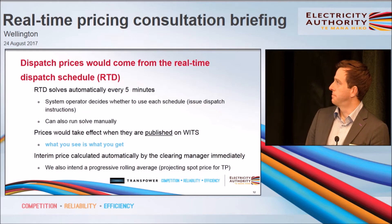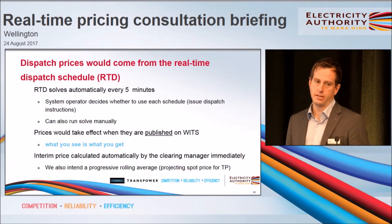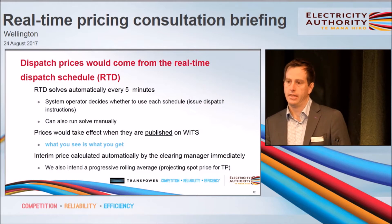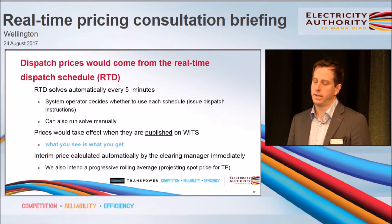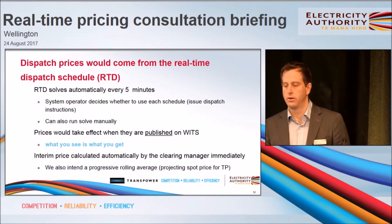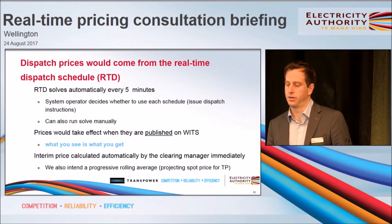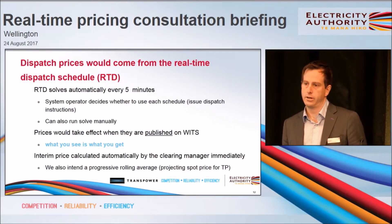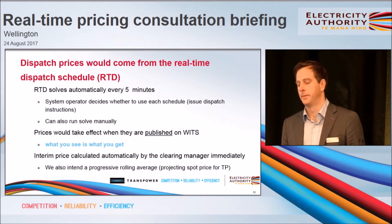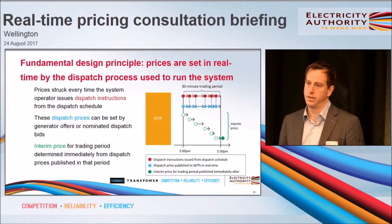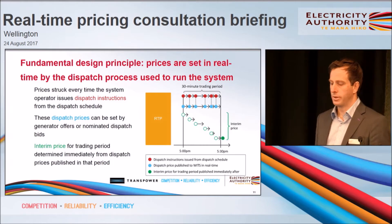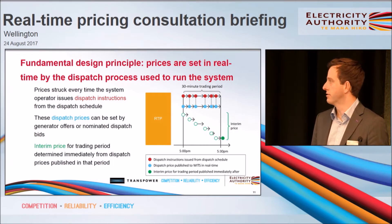These dispatch prices will come from the system operator's existing real-time dispatch schedule RTD, which solves automatically every five minutes. However, the coordinators will make a decision as to whether or not and perhaps when to issue new instructions from that schedule. They can also elect to run another solve manually. That's the principal reason why these prices are not necessarily going to be issued on neat five-minute boundaries — in theory you could have just one for the entire 30-minute period.